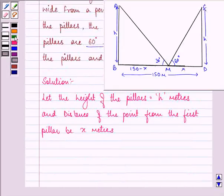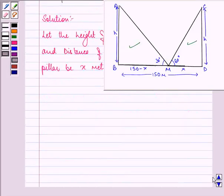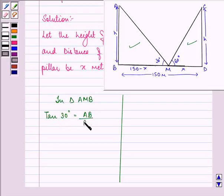Now we will be finding out H in respect of this triangle and this triangle. Let us divide our page into two columns. Now here, in triangle ANB, tan 30 degrees is equal to AB upon BM. This implies 1 by root 3, that is the value of tan 30, is equal to H, that is AB upon 150 minus X.